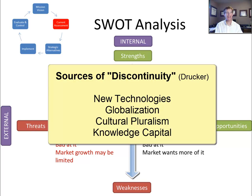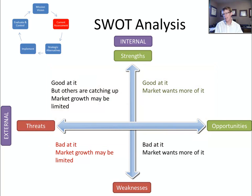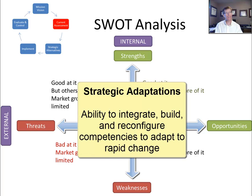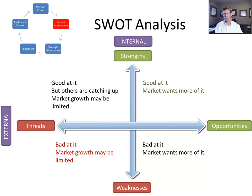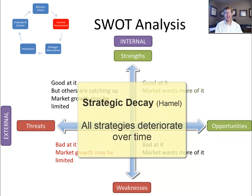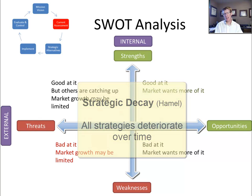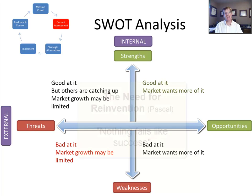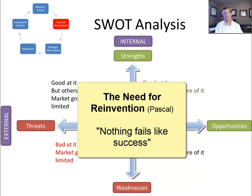This speaks to the importance of identifying external opportunities and threats. In 1997, David Tease pioneered research suggesting that strategic management was now premised on the ability to integrate, build, and reconfigure internal and external competencies to address rapidly changing environments — notice the integration of strengths and weaknesses to opportunities and threats. In 2000, Gary Hamill discussed strategic decay: the notion that the value of all strategies, no matter how brilliant, decay over time, which is simply another way of saying that strategic development needs to be dynamic.